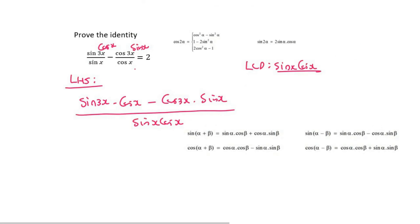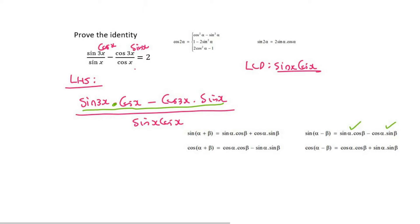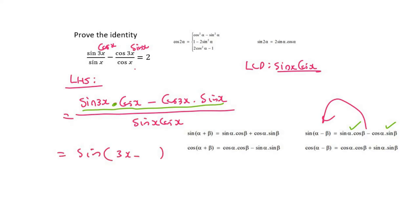Now if you look carefully at the numerator, can you see that this is a compound angle? It's sin cos minus cos sin — here it is: sin cos minus cos sin. How cool is that? So we're going to simplify it, and that's going to become sin of (3x minus x) over sin x cos x.